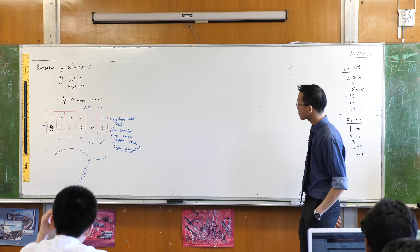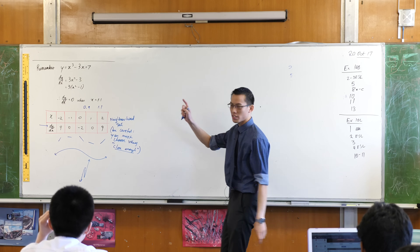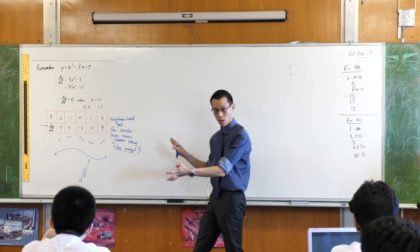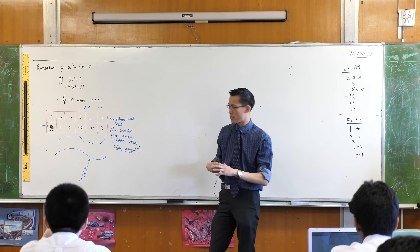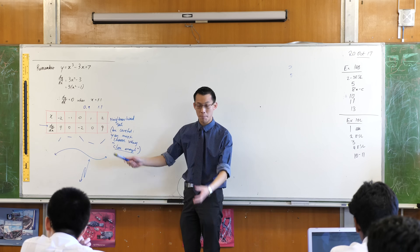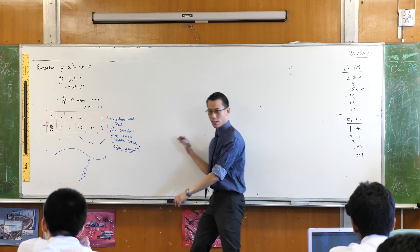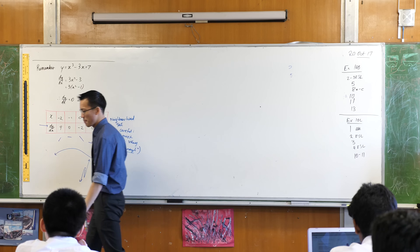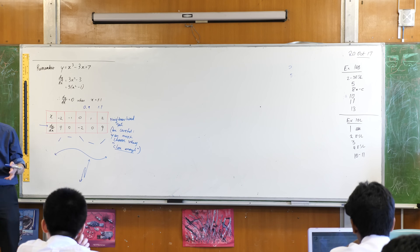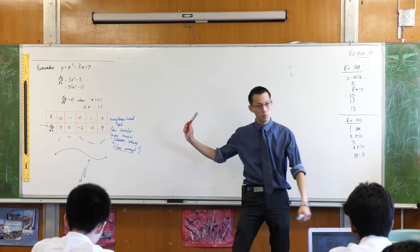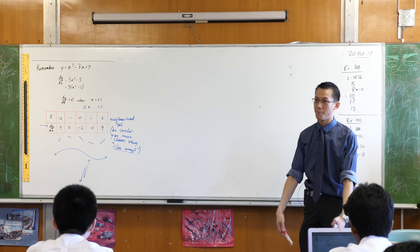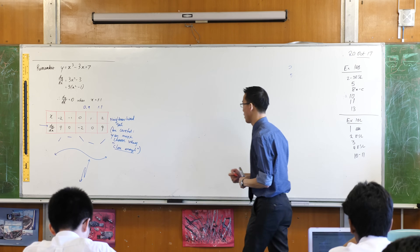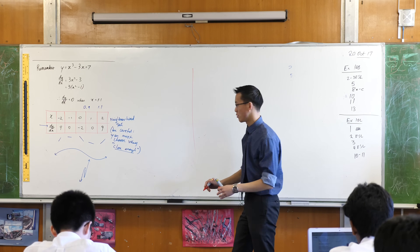Now I want us to draw this function properly. We've got all the features. I haven't given you the y-values yet but you can quickly work them out. Draw yourself a nice big, fresh set of axes. I've told you the x-values of the stationary points — now work out the y-values and draw this as accurately as you possibly can.